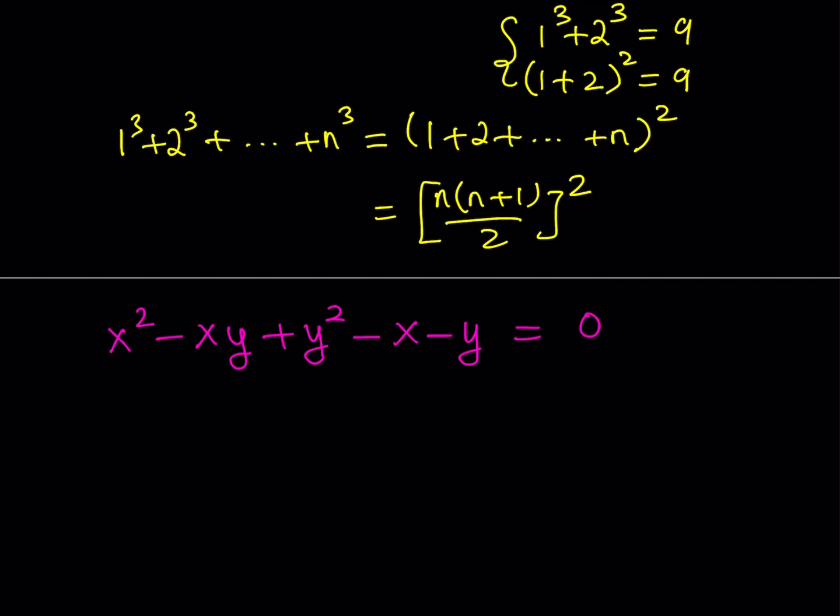Let's bring x plus y to the left, giving us: x squared minus xy plus y squared minus x minus y equals 0. The plan is to turn this into a sum of squares. If you have a sum of squares equal to 0, every term must equal 0, because squared terms can't be negative. But as it is, this isn't ready to be a sum of squares, so I'd like to multiply both sides by 2.